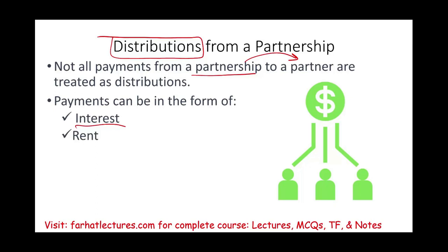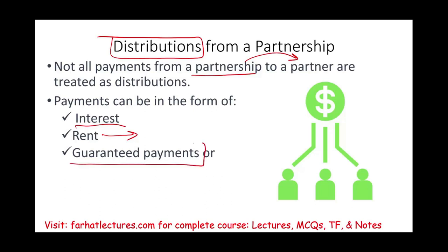Another form could be where partners have their own property, plant, and building in a separate C corporation, S corporation, or sole proprietorship, and they might rent that property to the partnership. The business will pay rent to the partners. Also, we discussed guaranteed payments, and we specifically stated that guaranteed payments are not distributions — we had a whole session about guaranteed payments.